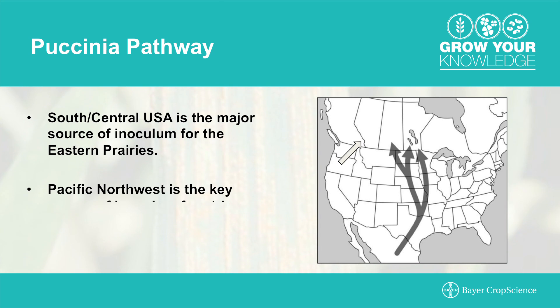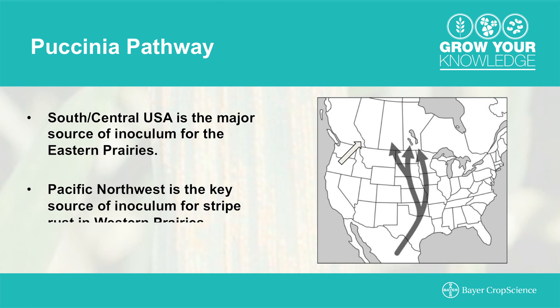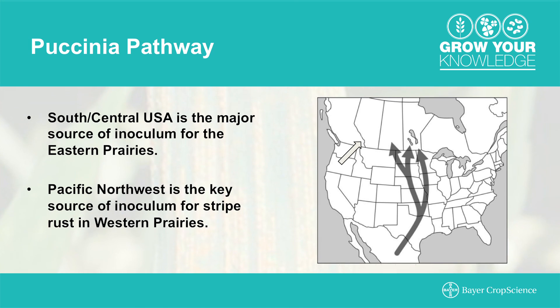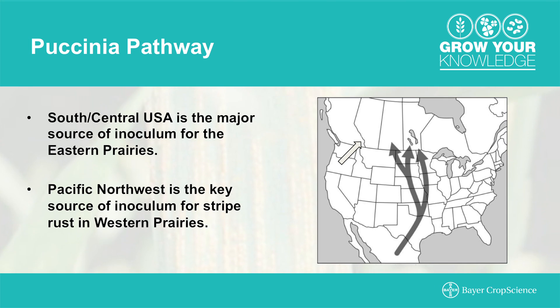When we look at the western prairies, the primary disease of concern is stripe rust, where a source of inoculum is developed in the Pacific Northwest and transported into the western prairies.